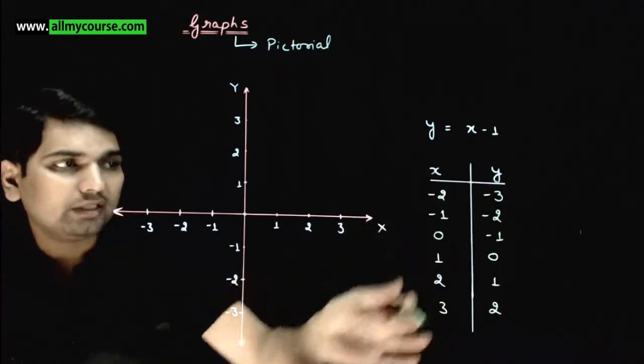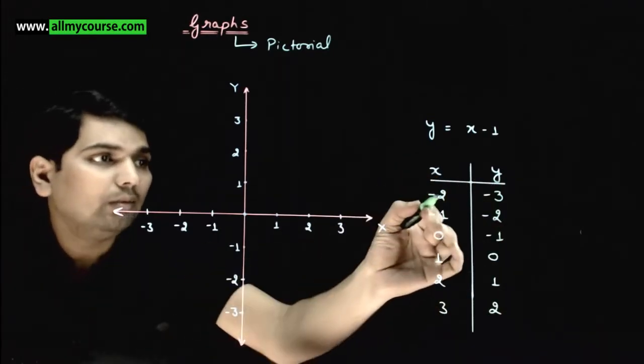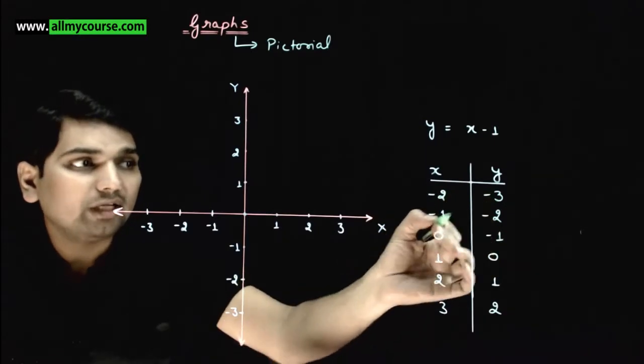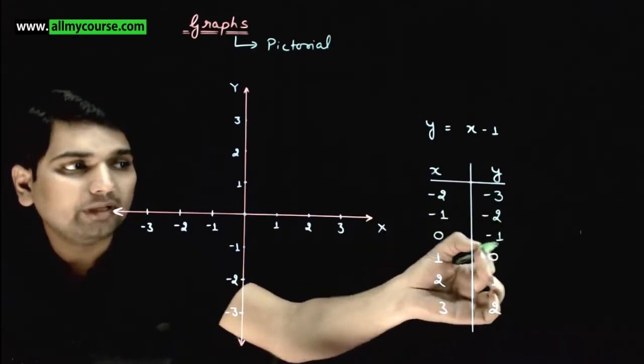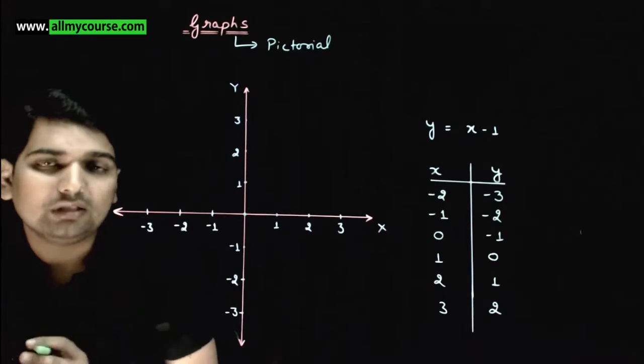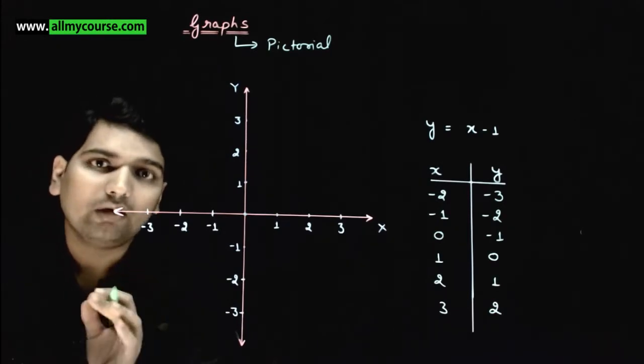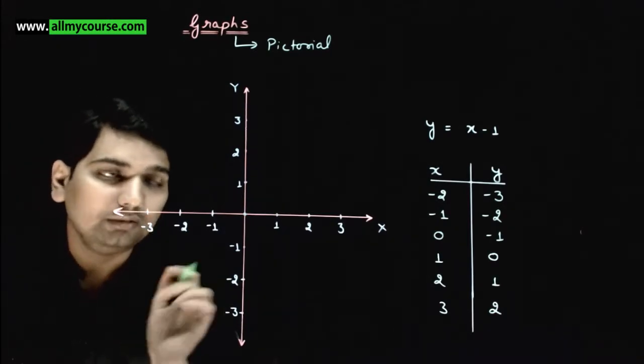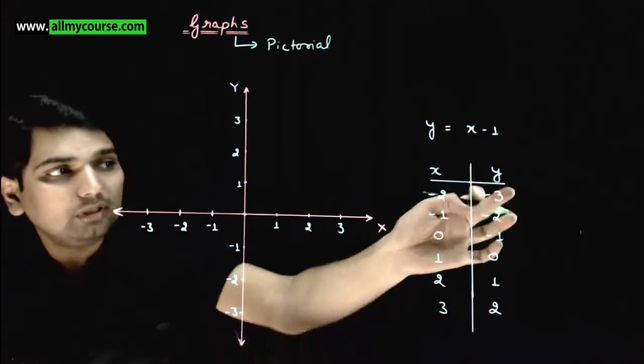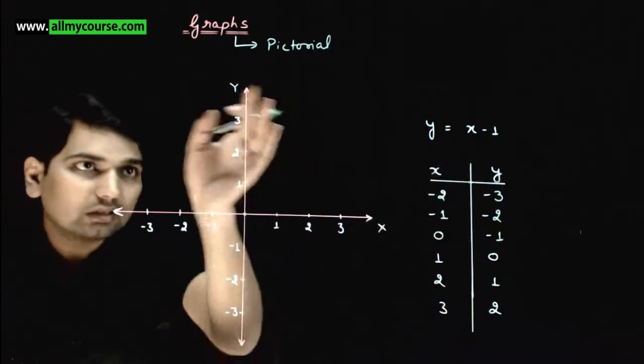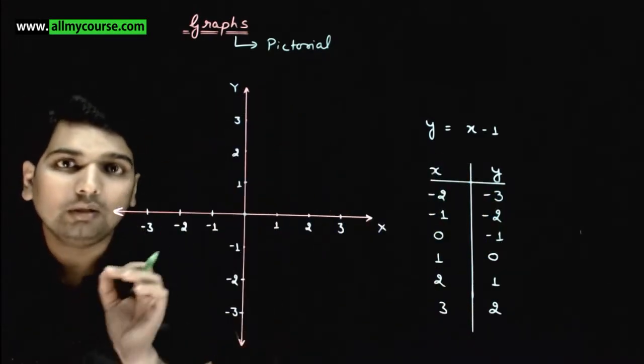So this is your y, this is x. Basically, minus 2 comma minus 3, minus 1 comma minus 2, 0 comma minus 1. These are all the points through which our graph should pass. Now we will plot these points on this x-y coordinate system.